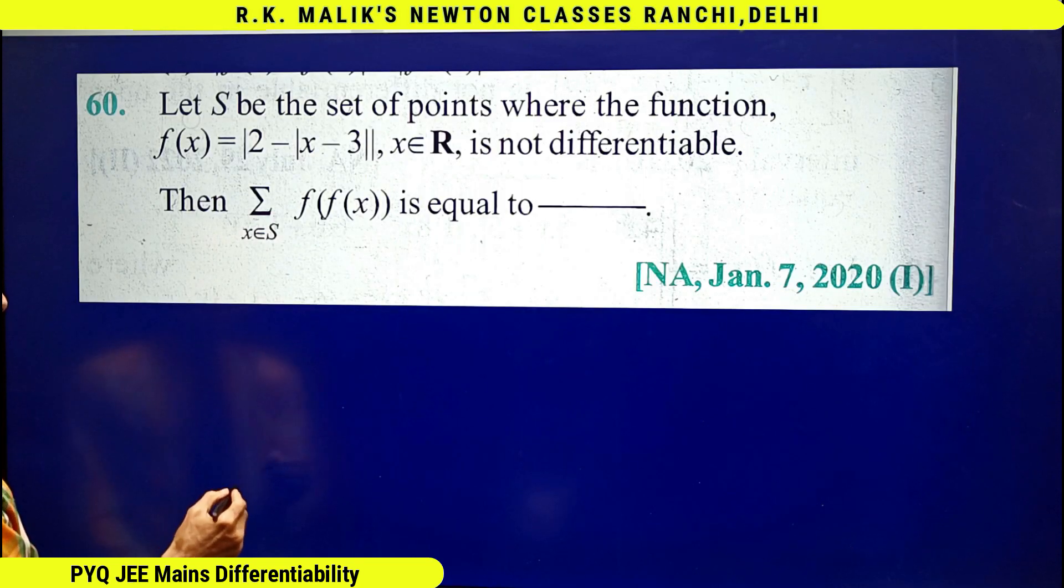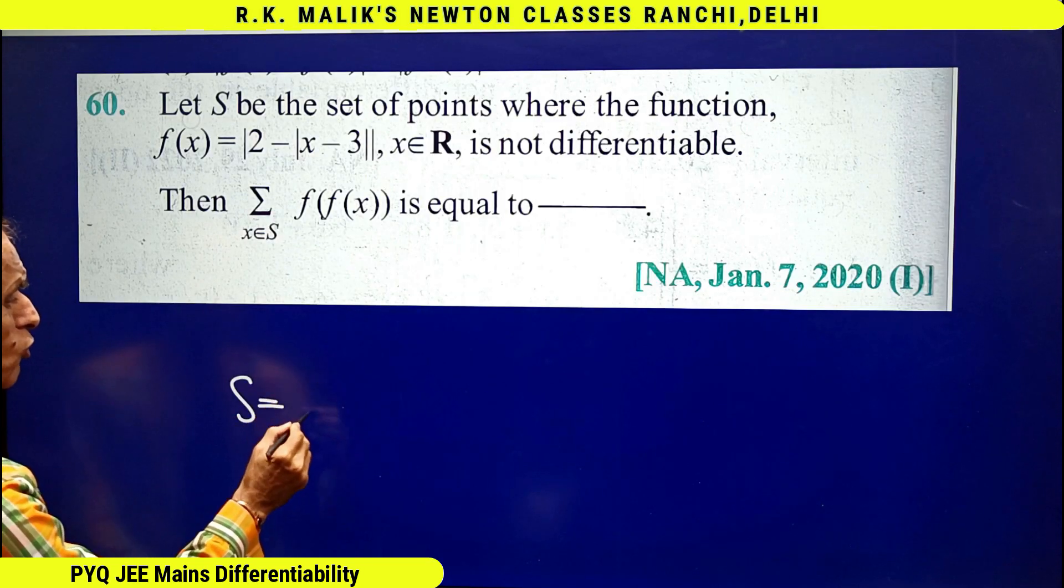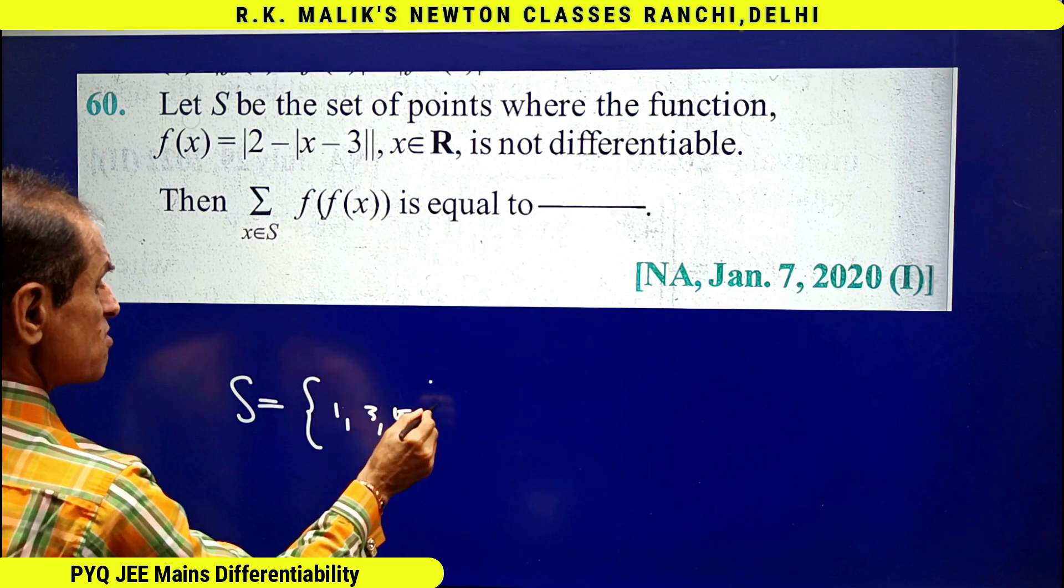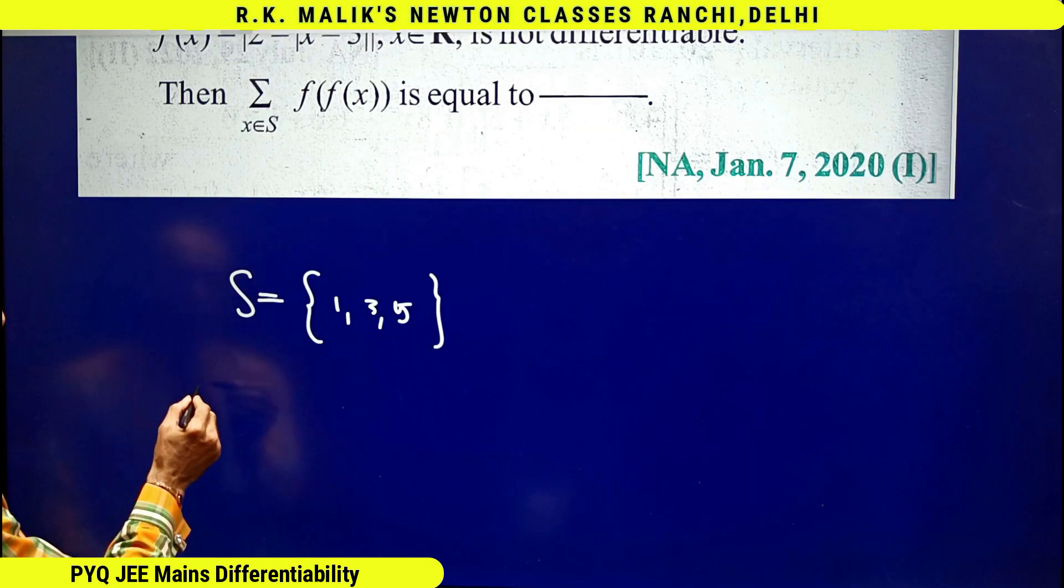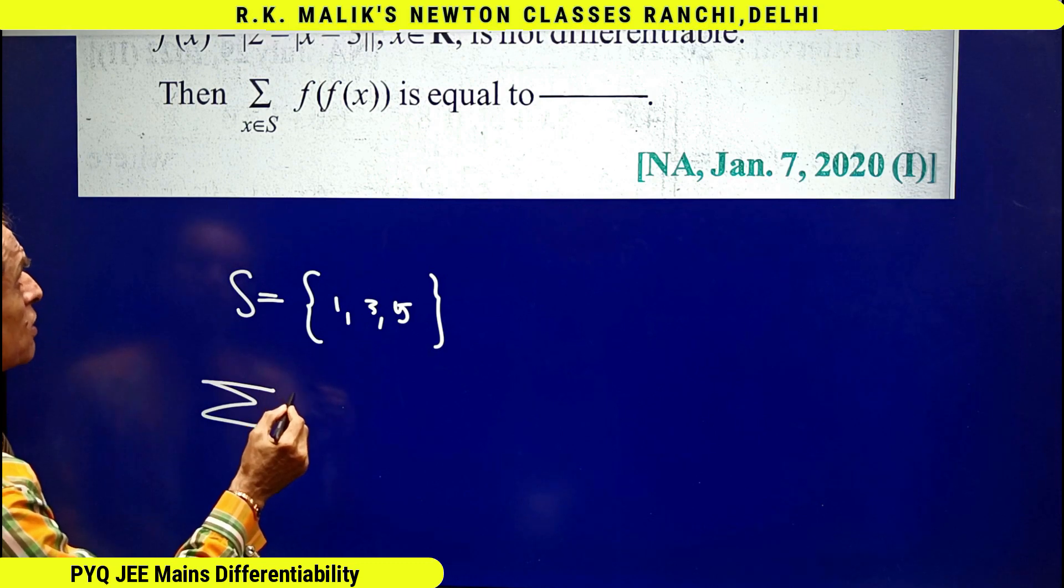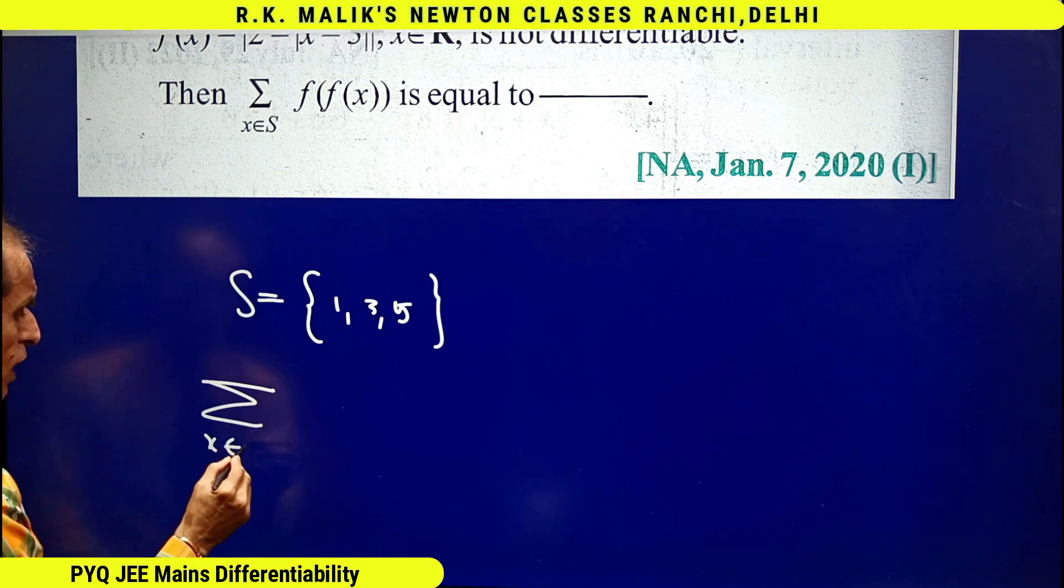Hence the set S is equal to 1, 3, 5, and now we have to find the value of sigma x belongs to S, f of f of x.